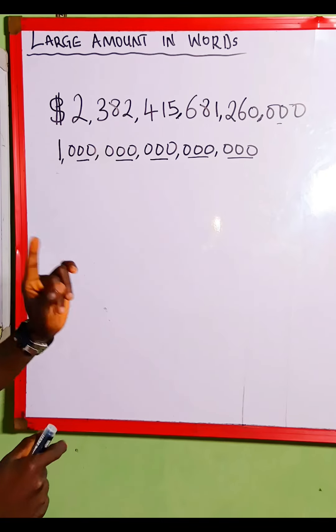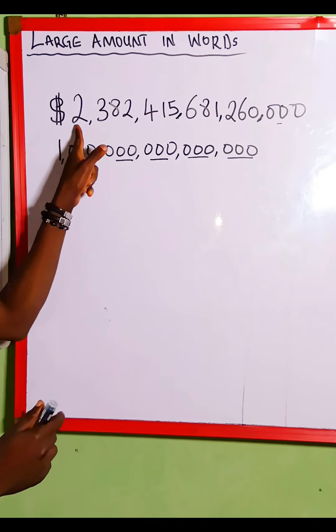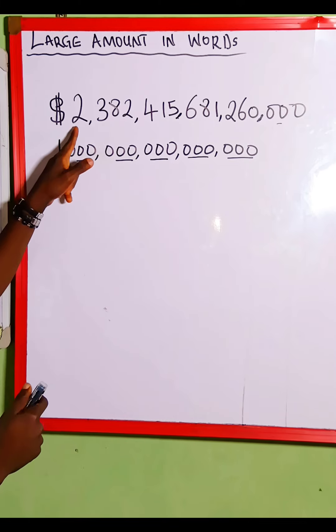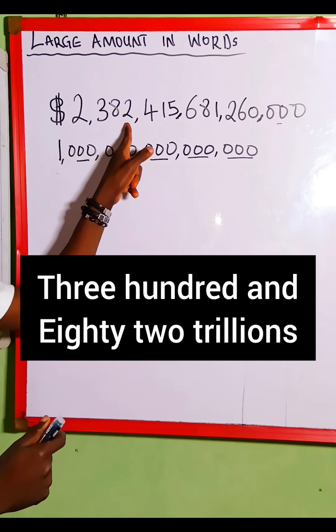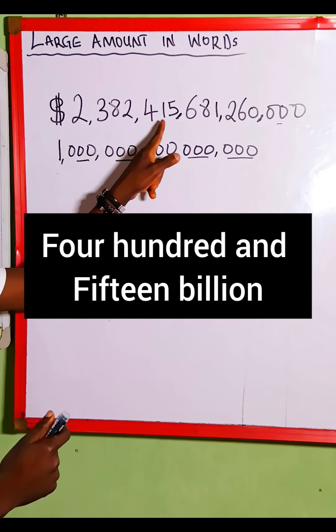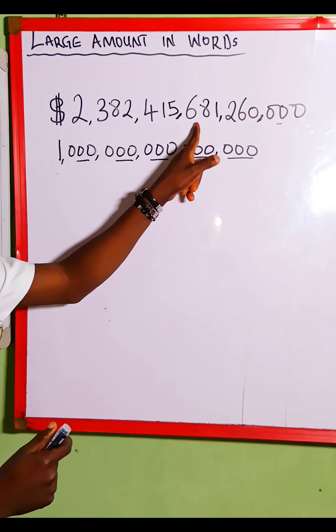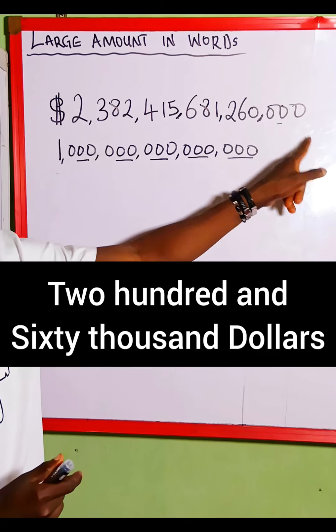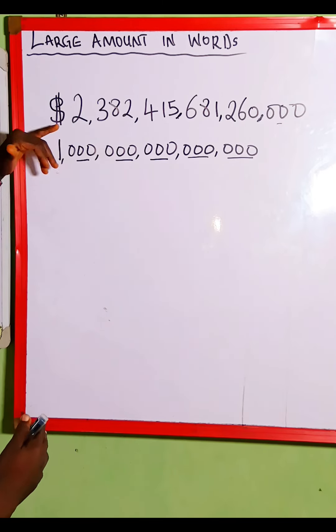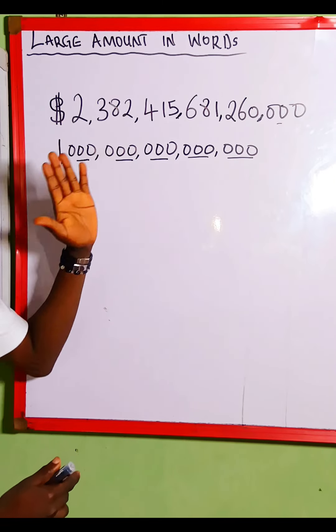Now to read this properly, what we are going to do is start from this single one, which is this two. We pronounce this as 2 quadrillion, 382 trillion, 415 billion, 681 million, 260 thousand dollars. So this is how to read this amount properly in words.